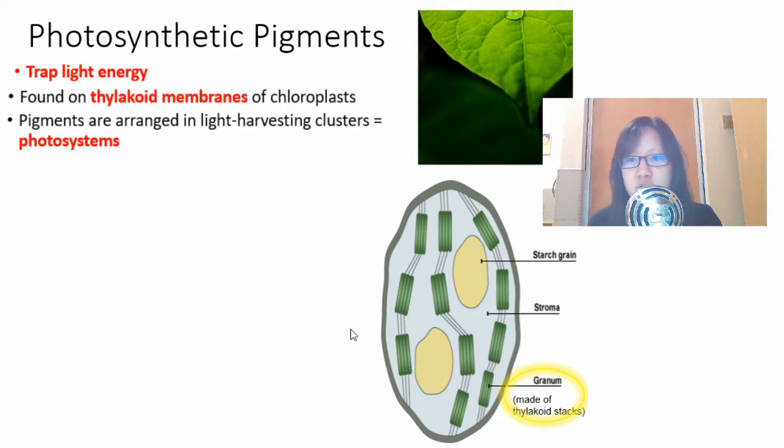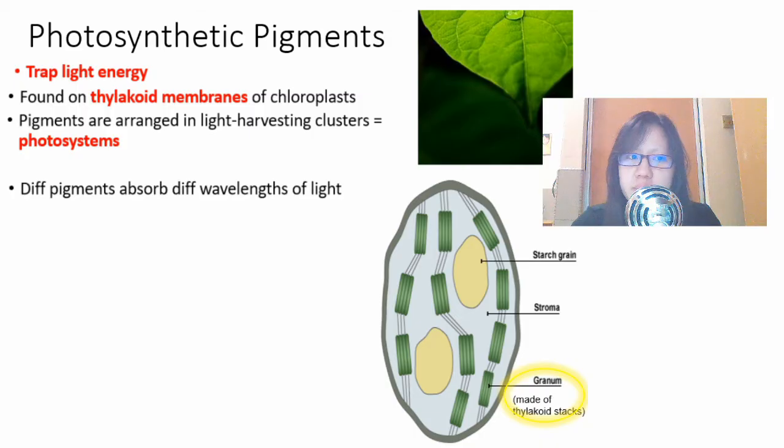They are not scattered around but they are actually arranged in light harvesting clusters called photosystems. We will see how it looks like exactly in the next slide. Before that, it's important to know that different pigments can absorb different wavelengths of light and also reflect different wavelengths of light.